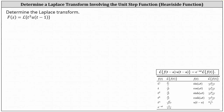We want to find the Laplace transform of the given function t squared times u of the quantity t minus one. To find the Laplace transform, we use the shifting property shown below, where the Laplace transform of f of the quantity t minus a times u of the quantity t minus a equals e to the power of negative a s times the Laplace transform of f of t.